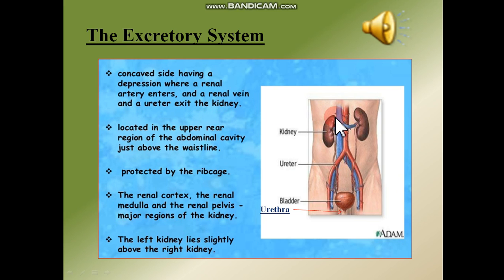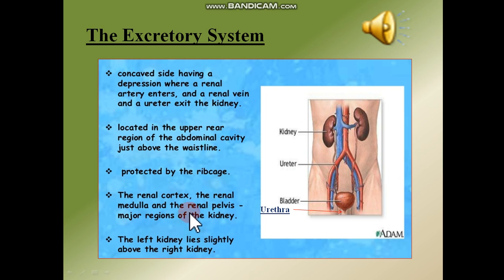Here you can see that the kidney has a depression — it is the entry point of the renal artery and the exit point of the renal vein and ureter. The kidney is protected by the rib cage on the front side. The renal cortex, renal medulla, and renal pelvis are the major regions of the kidney.